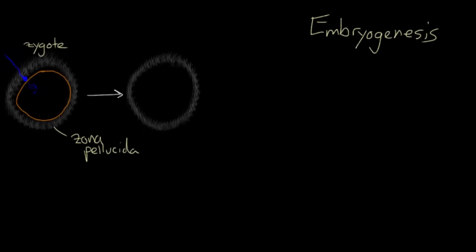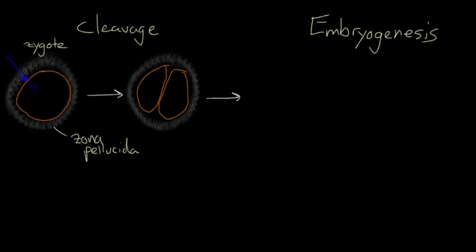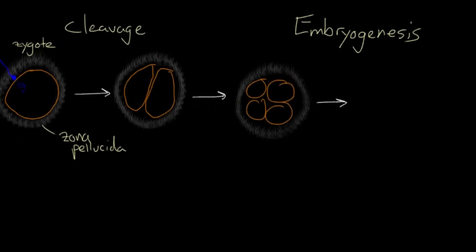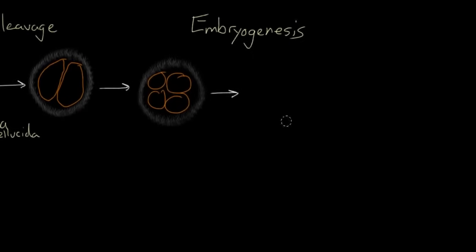And you've got to do it fast — so fast that you don't have time to grow. So you actually just split into two cells. This process of splitting without growth is called cleavage. And you do this a number of times, dividing from two cells to four, and from four cells to eight, all the while staying within the zona pellucida.